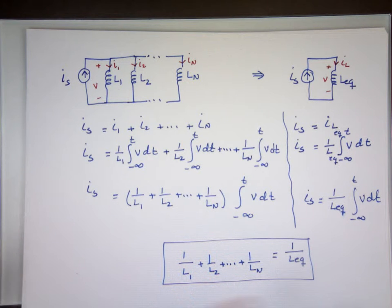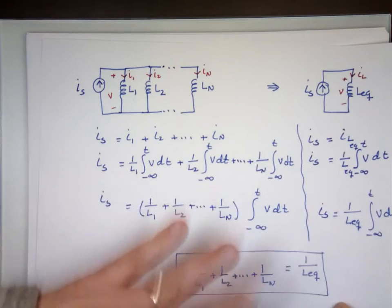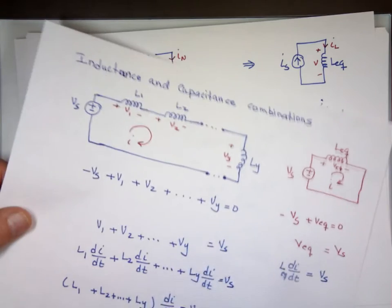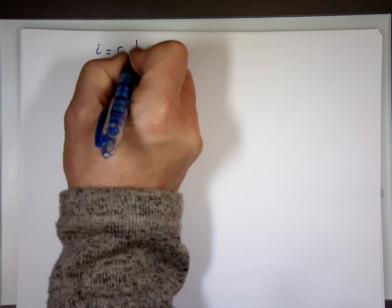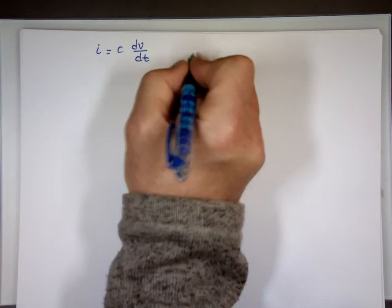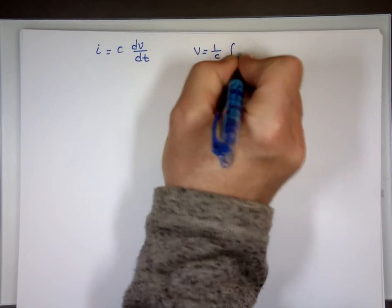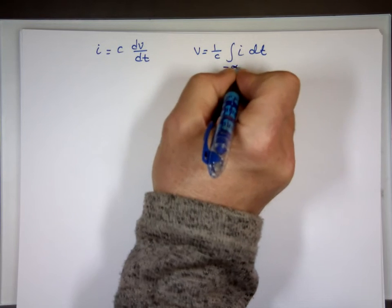Now I can derive the equation for capacitors, but I'll just put it there instead of going through the math — the same thing. For capacitors, remember: I equals C·dv/dt, and V equals 1/C times the integral of i dt.